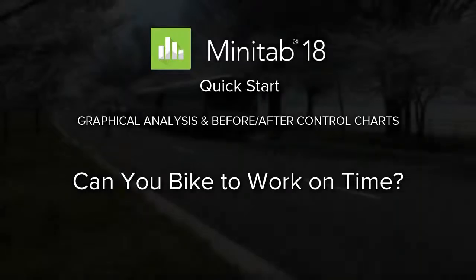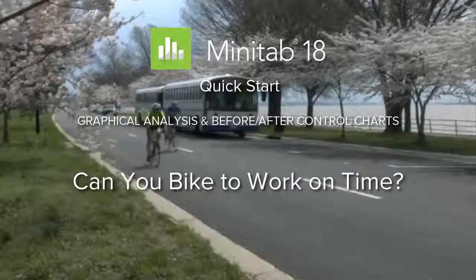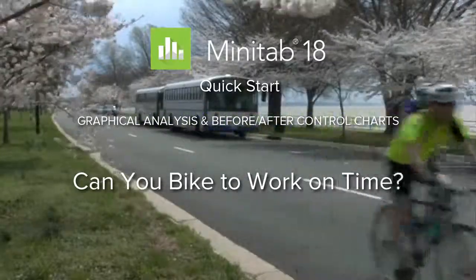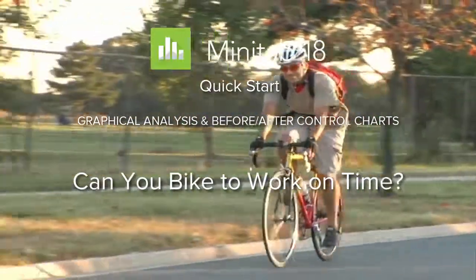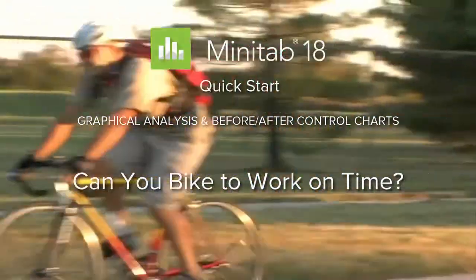Joel's boss believes that since he began biking to work, Joel often arrives late to the office. But Joel, who has been logging his daily commute time, thinks his boss is mistaken.